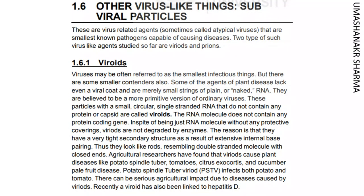Sub-viral particles are virus-related agents, sometimes called atypical viruses, that are the smallest known pathogens capable of causing diseases. Two types of such virus-like agents studied so far are viroids and prions.